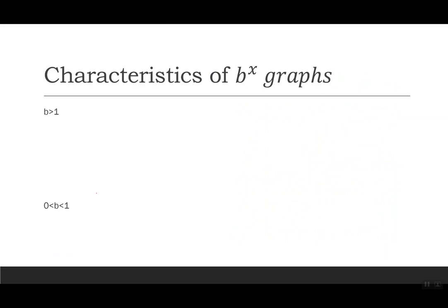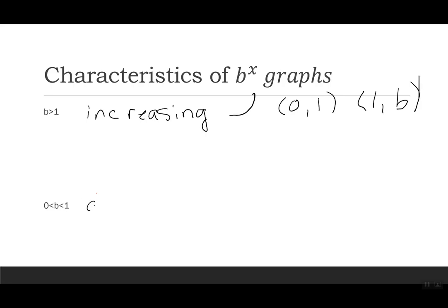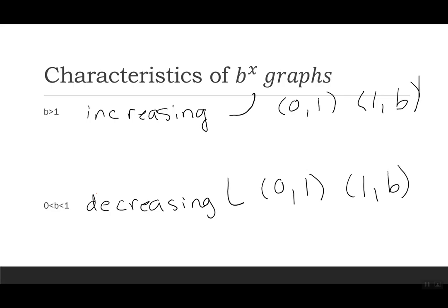Let's summarize. There are two cases for exponential functions. When b is greater than 1, we have an increasing function — plug in 0 to get 1, plug in 1 to get b. When b is between 0 and 1, the function is decreasing — the curve goes in the opposite direction. Still plug in 0 to get 1, plug in 1 to get b, but also plug in negative 1 to flip the base, which helps visualize the shape. Three points for the decreasing case, two points for the increasing case.